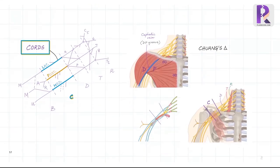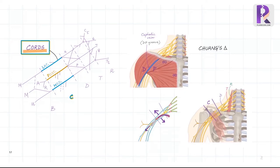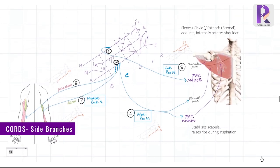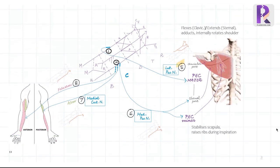Now let's look into the relations of the cords. The lateral, medial, and posterior cords are named and related to the axillary artery as we saw in the previous video. The cords are located in a triangular infraclavicular space lateral to the deltopectoral groove, also called Chuang's triangle. As we dissect deeper through the deltopectoral groove, we find the pectoralis minor muscle, under which we first see the medial cord. The lateral pectoral nerve is the only side branch from the lateral cord; it traverses medially, gives off a communication to the medial pectoral nerve, and continues to supply the clavicular and sternal portions of pectoralis major. It originates from the upper C5, C6, C7 nerve roots.